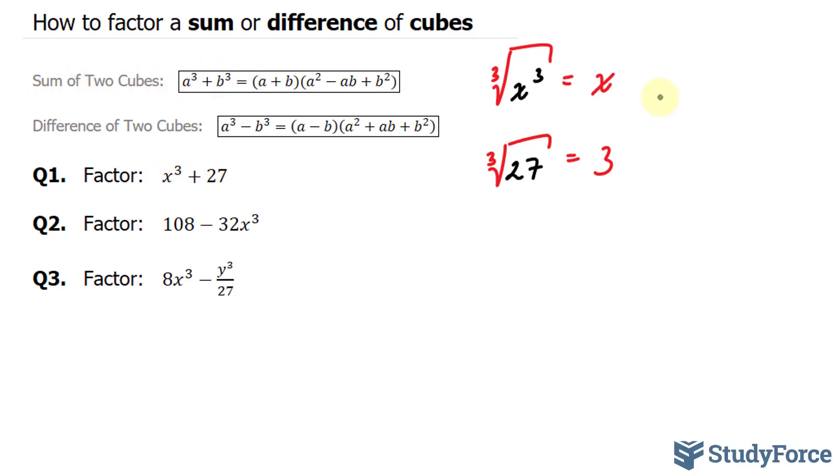So the next thing that I'll do is assign this term as my a and this term as my b. And for a sum of cubes, it doesn't matter which of the two terms you assign as your a or your b. In the end, you end up with the same answer. That being said, my a is x plus my b, which is 3.